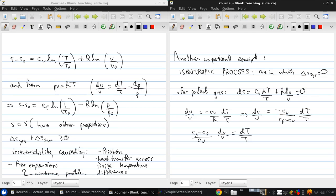Now based on the definition of gamma, we can write this as 1 minus gamma dv over v equals dt over t.